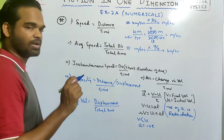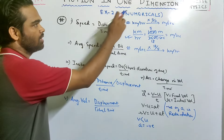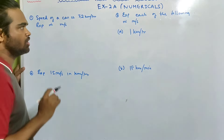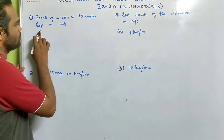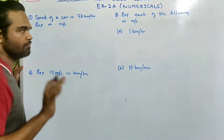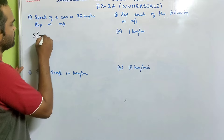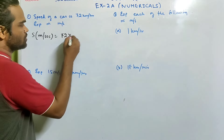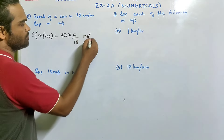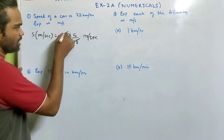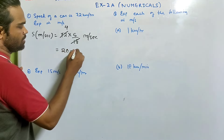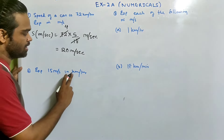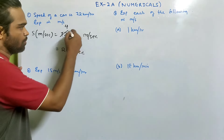Now let's look at the numericals from Exercise 2A. Sum 1: the speed of a car is 72 km/h — express it in meter per second. To convert km/h to m/s, multiply by 5/18: 72 × 5/18 = 20 meter per second. Sum 2: express 15 meter per second in kilometer per hour. Multiply by 18/5.